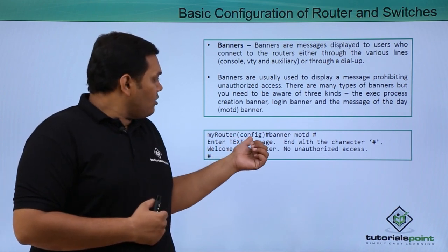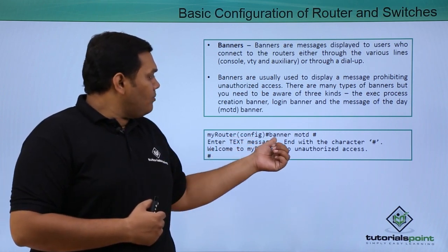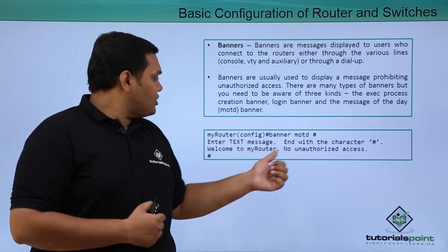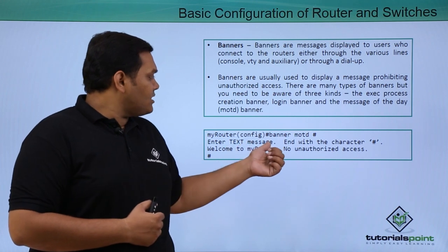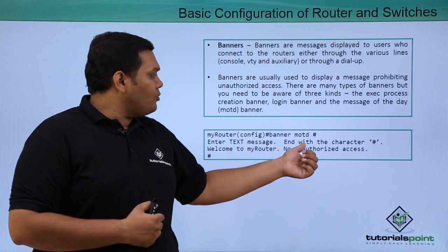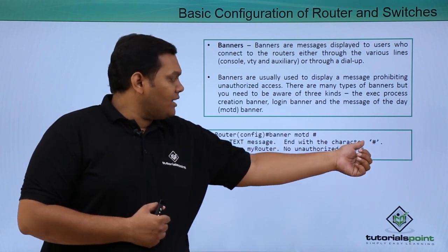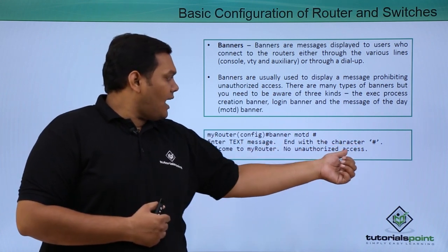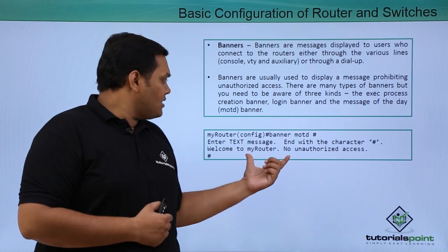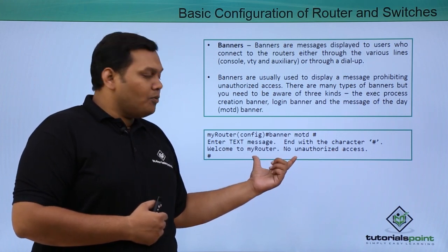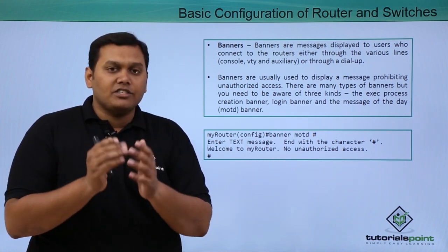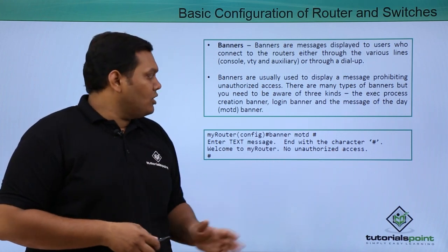In configuration mode, use the command 'banner MOTD #', then enter your text message and end with the hash character. The message 'no authorization access' is the display banner that will appear whenever someone tries to access the router.